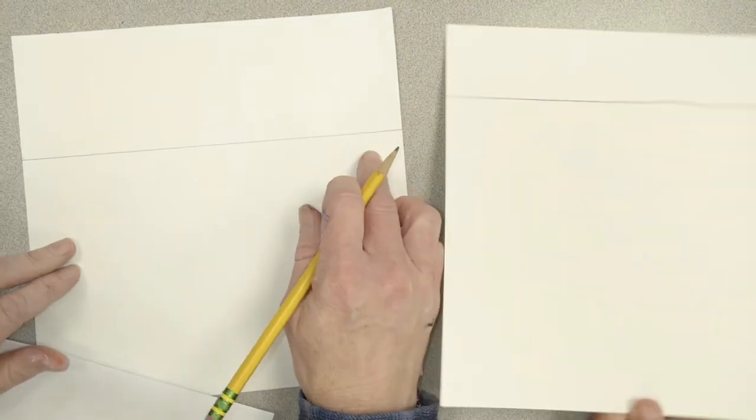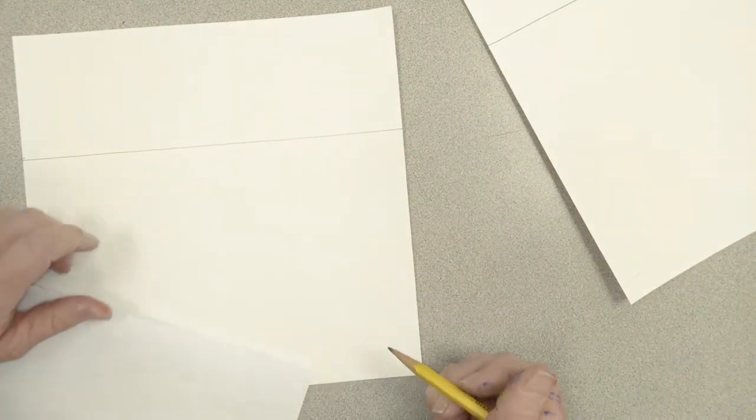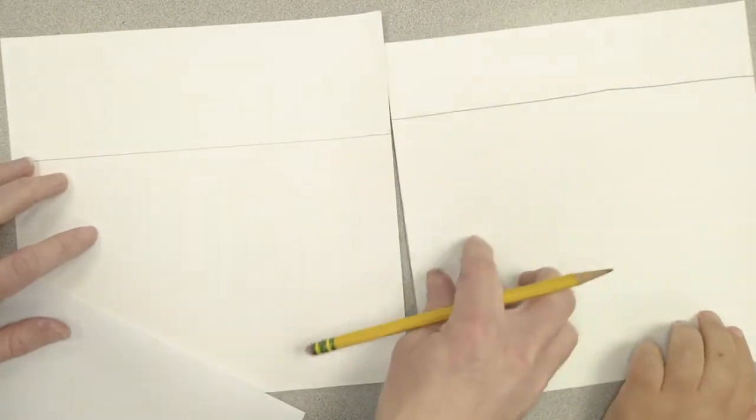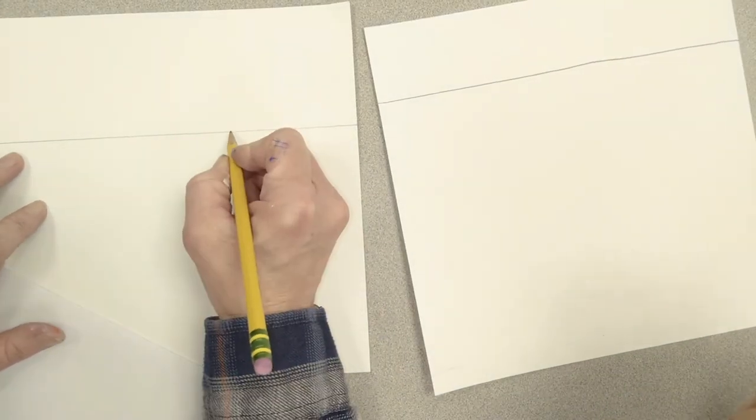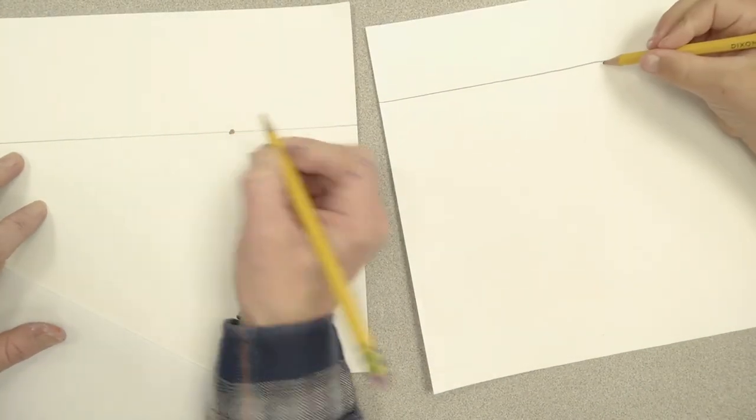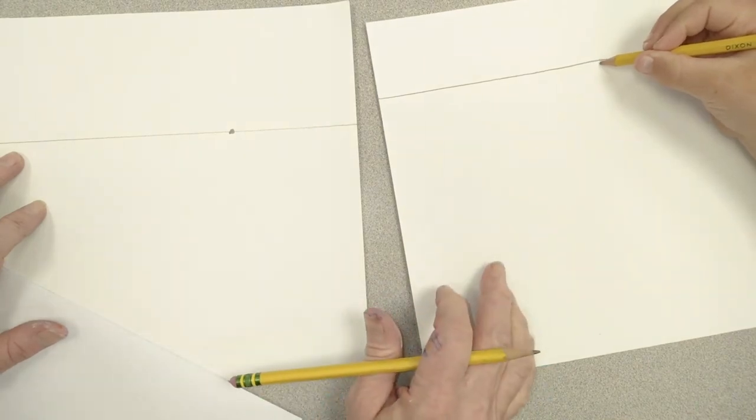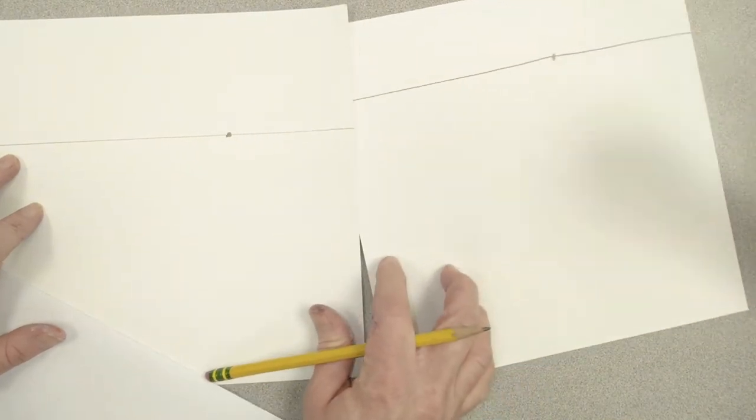Now what we have to do is, this is the horizon line, and on the horizon line we have to pick a point. And that's going to be what we call the vanishing point. So we're going to pick a point along the horizon line and just draw a dot. So I'm going to put mine right there. That's our vanishing point.